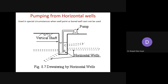Next is pumping from the horizontal well system. A number of horizontal wells are installed to collect groundwater. Whatever water comes through these horizontal wells is transferred to a central well. This central well has a vertical shaft that collects all water coming from the horizontal wells, and that water is taken out by a pump. By this method also you can reduce the groundwater. It is used for special circumstances when the well point or bore well system cannot be used.